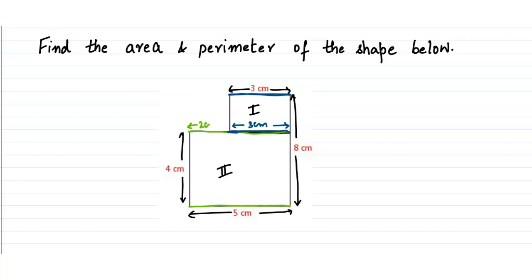Because then only the side opposite to this side will be five centimeters. Now let's look at the second rectangle — this is a four centimeter side, so the side opposite to this side should also be four centimeters.